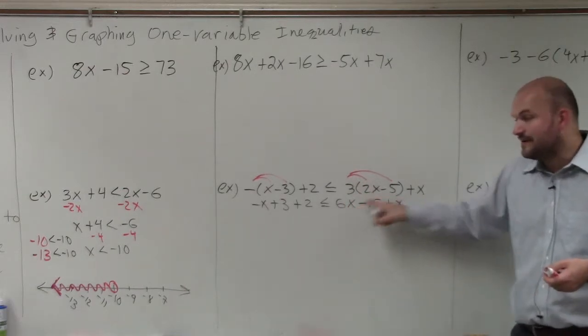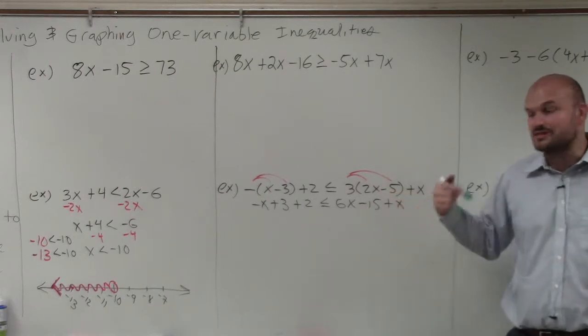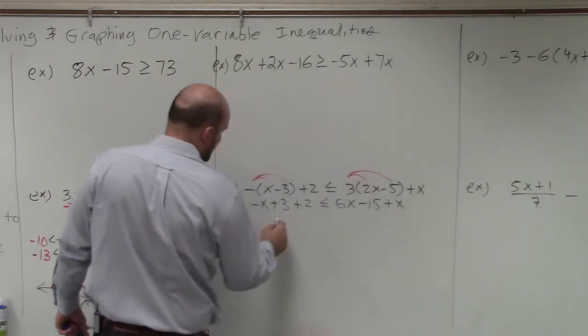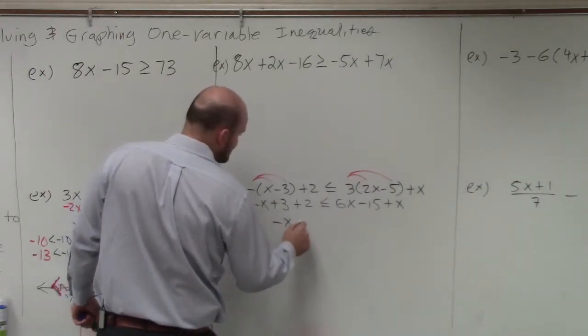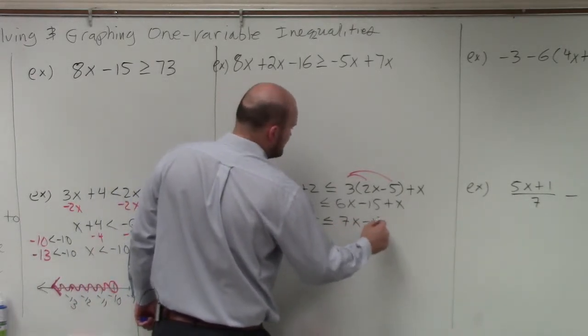Over here, I have variables. There's a number in between, but that's okay. You can just add 6x plus x, which is 7x. So therefore, I now obtain an equation: negative x plus 5 is less than or equal to 7x minus 15.